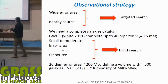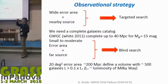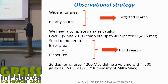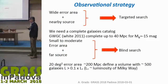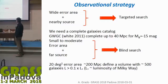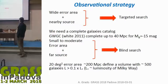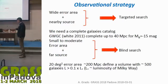If we have a wide error area and nearby sources, it makes sense to do a targeted search: we use a catalog of galaxies and observe each individual galaxy to see if something happens. That is what was done for GW170817. We need a complete galaxy catalog, and the best one currently is the gravitational wave galaxy catalog (GWGC), complete up to 40 Megaparsec for an absolute blue magnitude of minus 15.